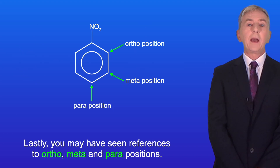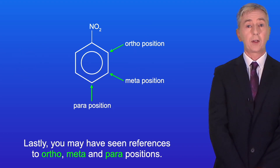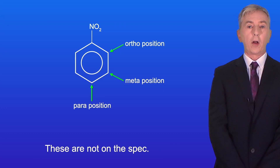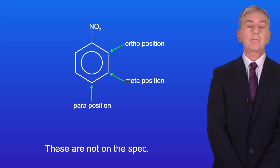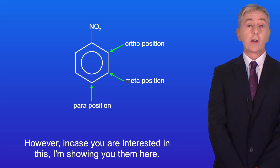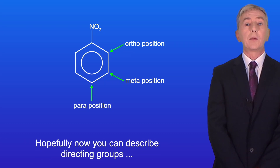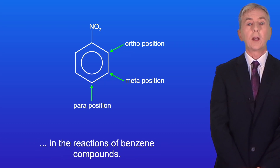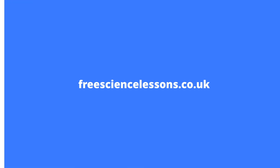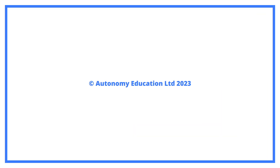Lastly, you may have seen references to ortho, meta and para positions. These are not on the spec; however, in case you are interested, I'm showing you them here. So hopefully now you can describe directing groups in the reactions of benzene compounds. Thank you for watching.